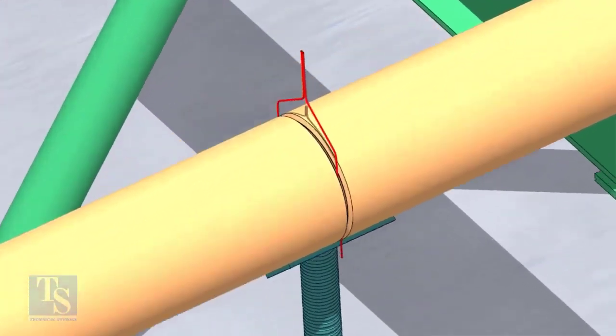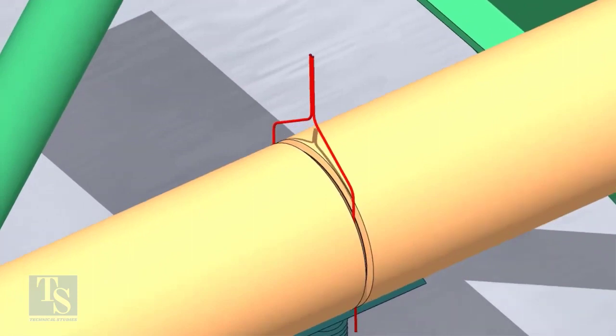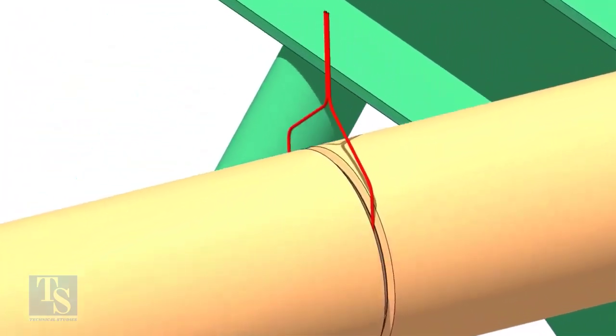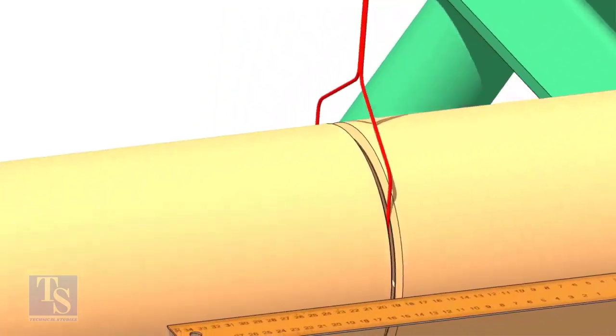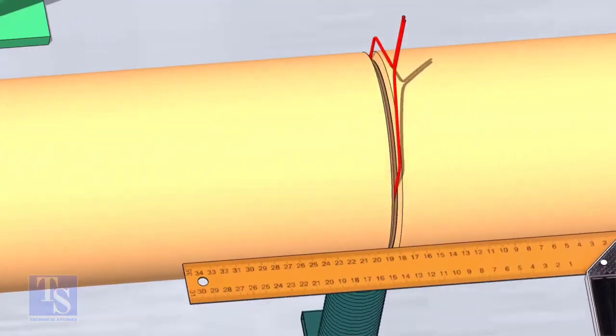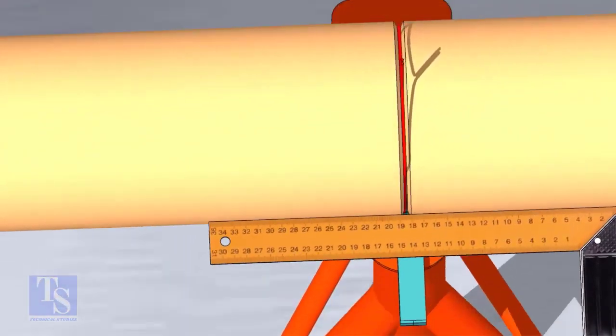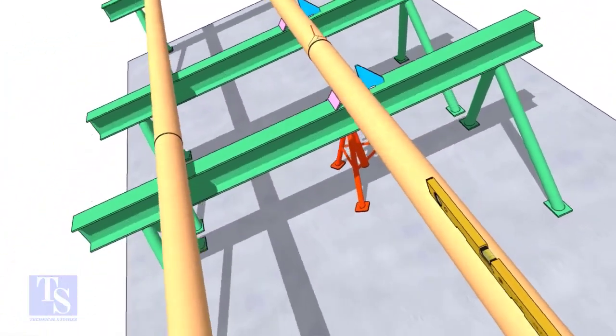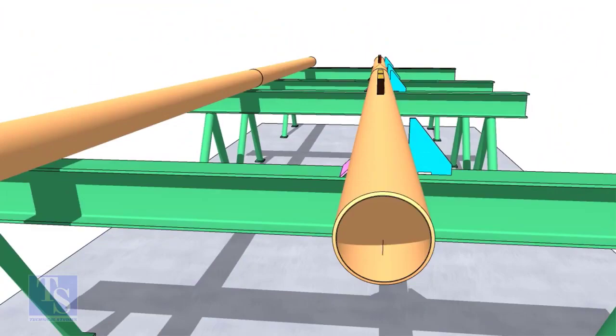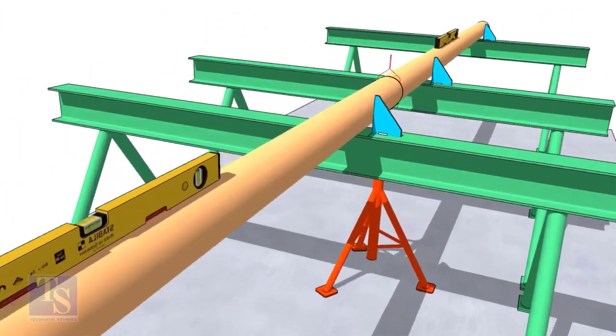Put the gap rod between the joint. Check if there is any overlap. Check the straightness of the pipes by looking from one end of the pipes. This is the best way to check the straightness.